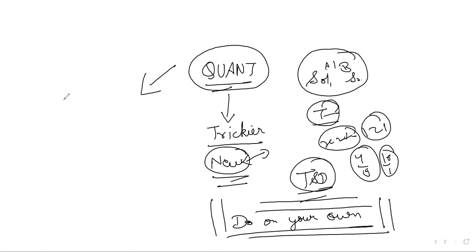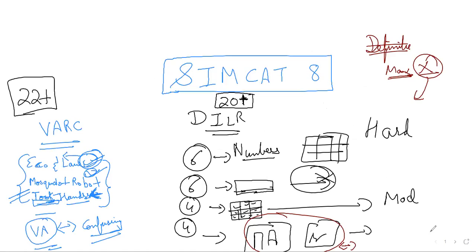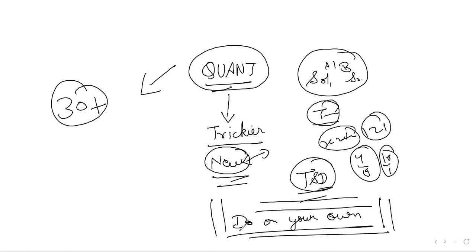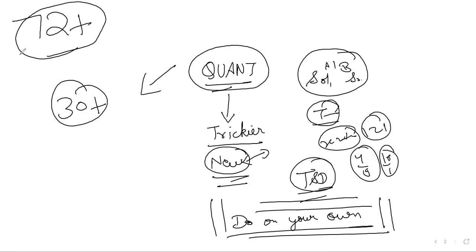In the Quant section, 30 marks is the bare minimum you should score. So 30 plus 20 plus 50 — that's 72 marks in this SimCat. 72 plus marks is what you should anyhow focus on scoring if you want to reach a very good percentile.